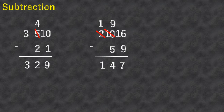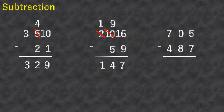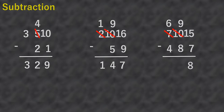Next example is seven hundred five minus four hundred eighty-seven. Five minus seven is not possible, and zero cannot give one. So we borrow from seven — seven becomes six and zero becomes ten. Then ten becomes nine and five becomes fifteen. Fifteen minus seven equals eight, nine minus eight equals one, and six minus four equals two. So seven hundred five minus four hundred eighty-seven equals two hundred eighteen.